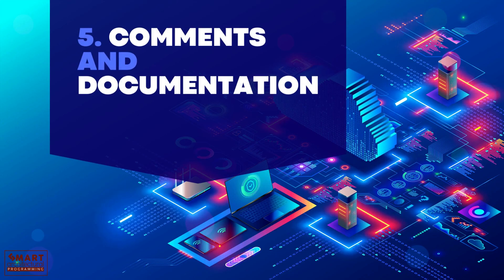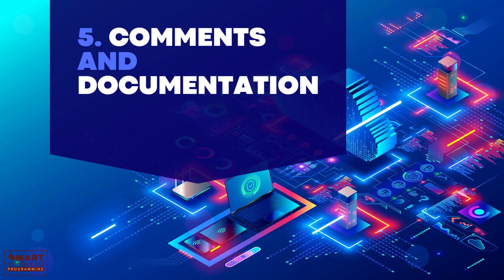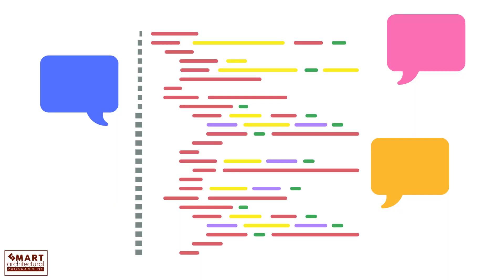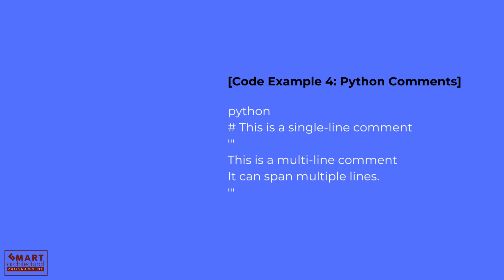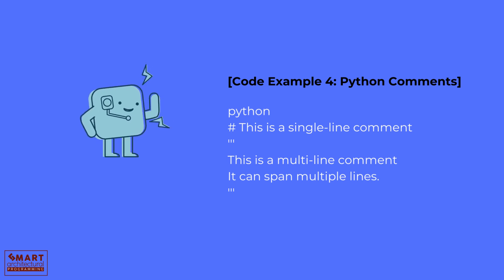Good programmers write comments in their code. Comments are notes for other developers, or your future self, to understand the code — it's essential for clear communication. In Python: a hash symbol starts a single-line comment, while triple quotes enclose multi-line comments that can span multiple lines.